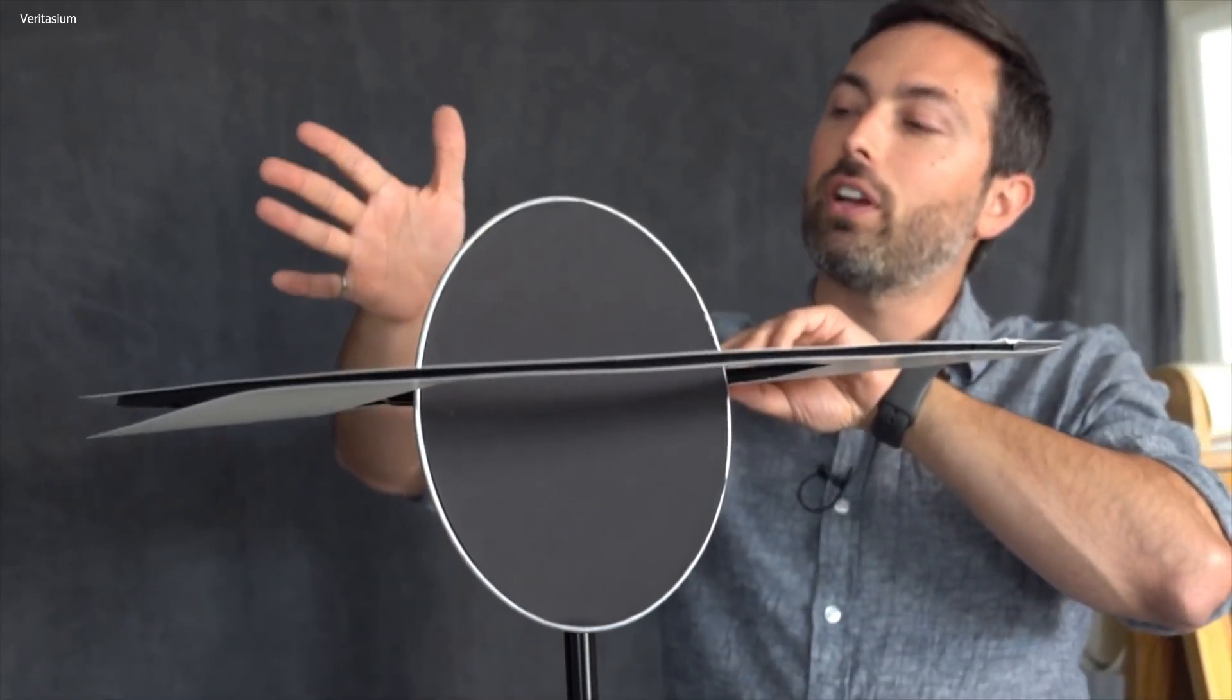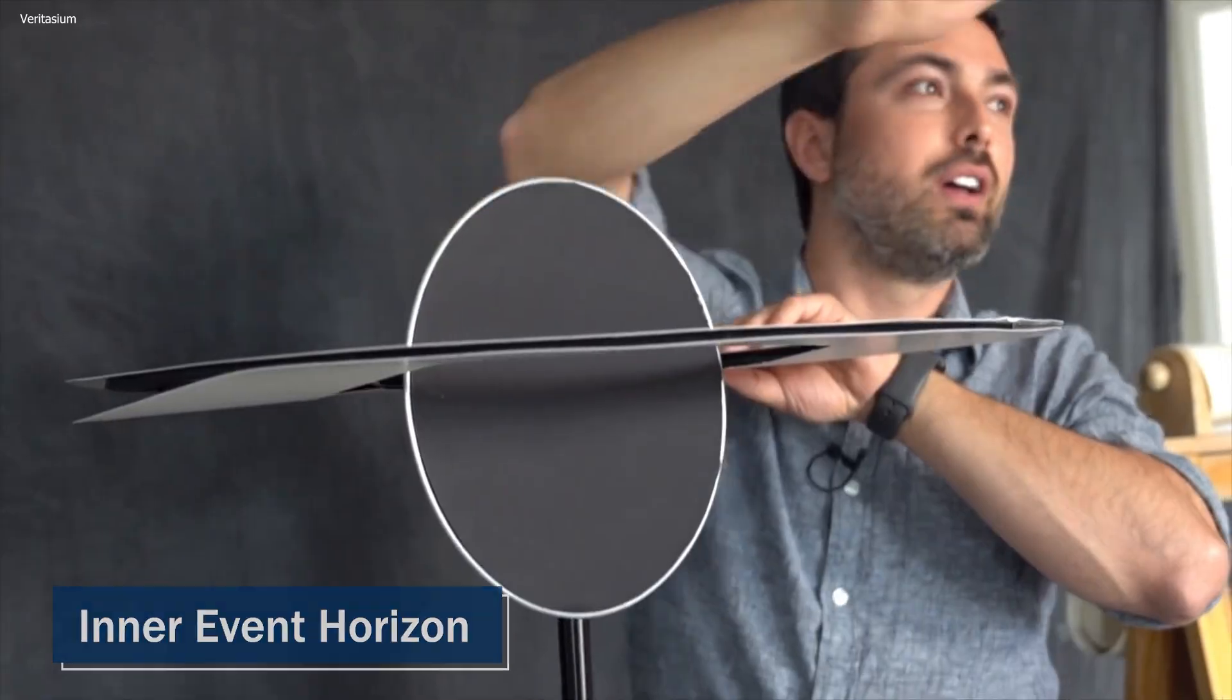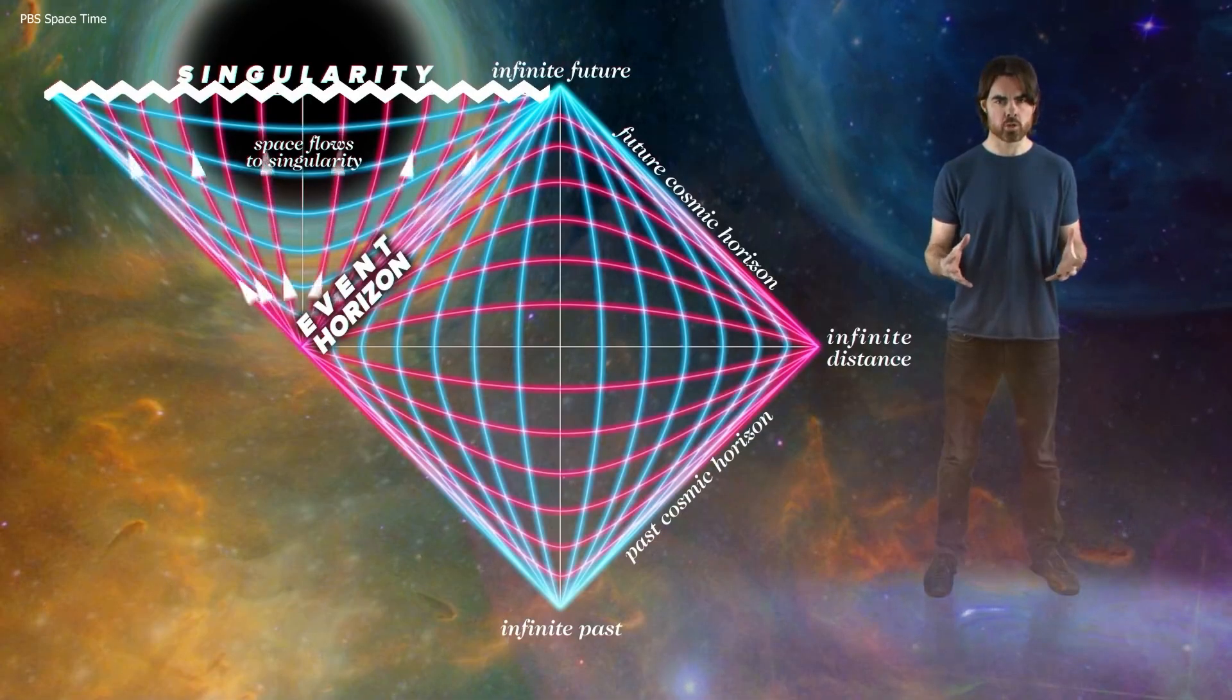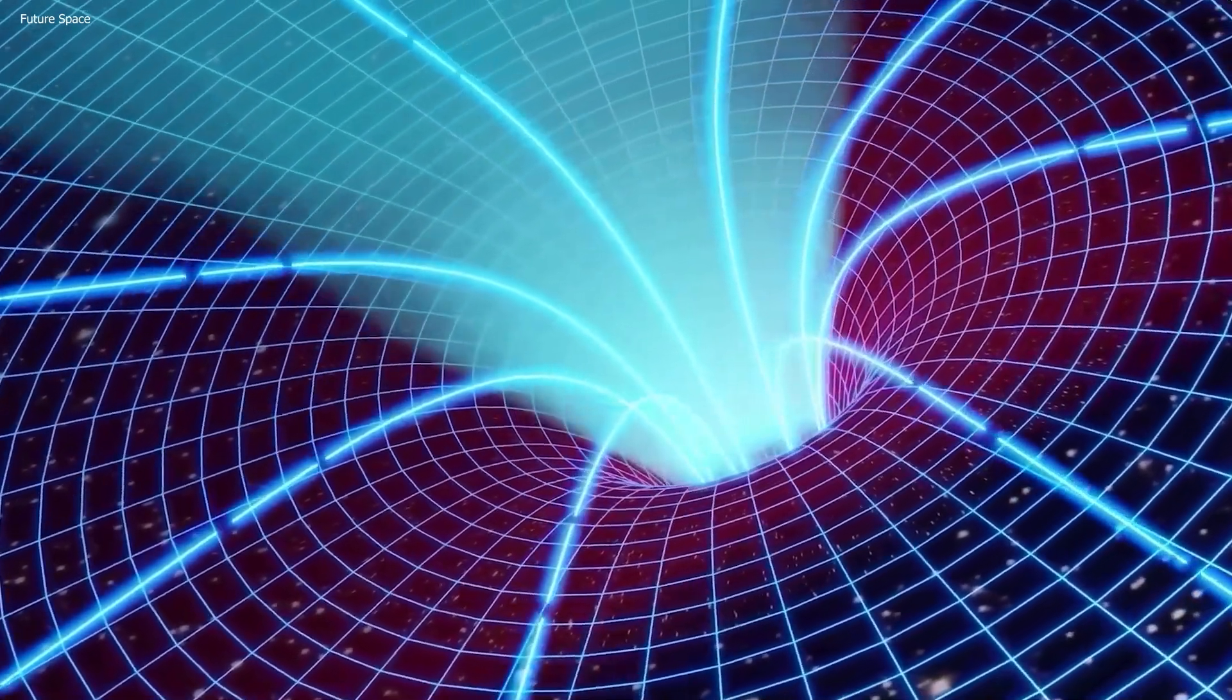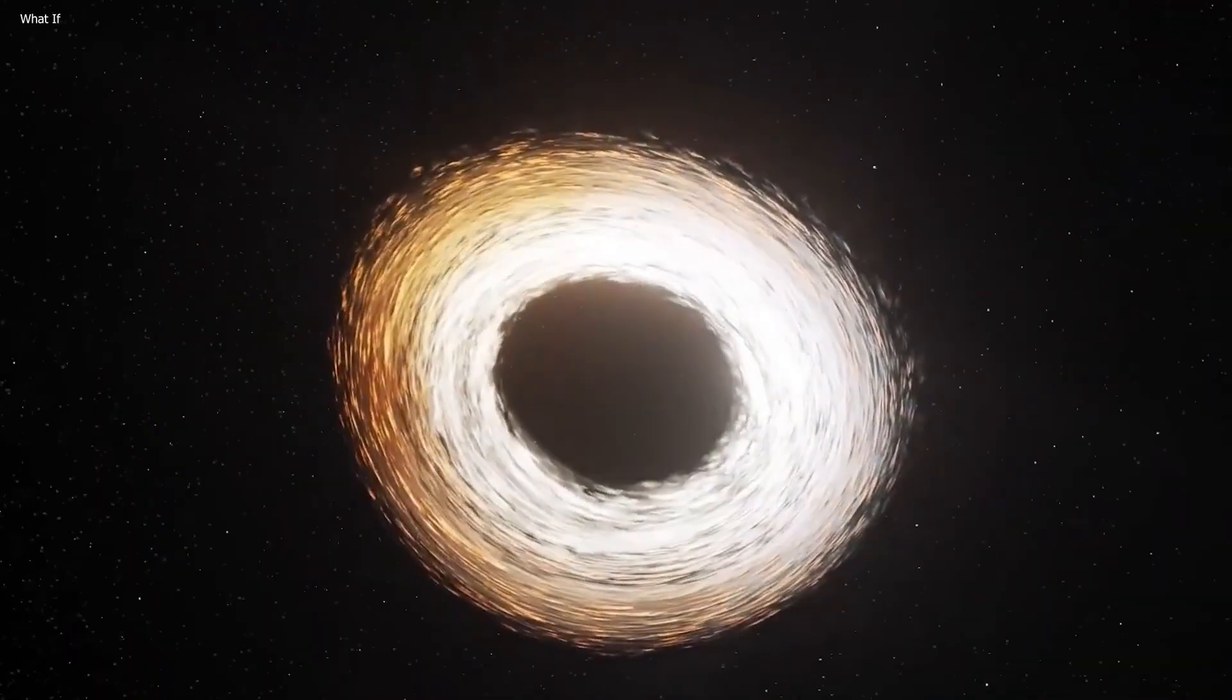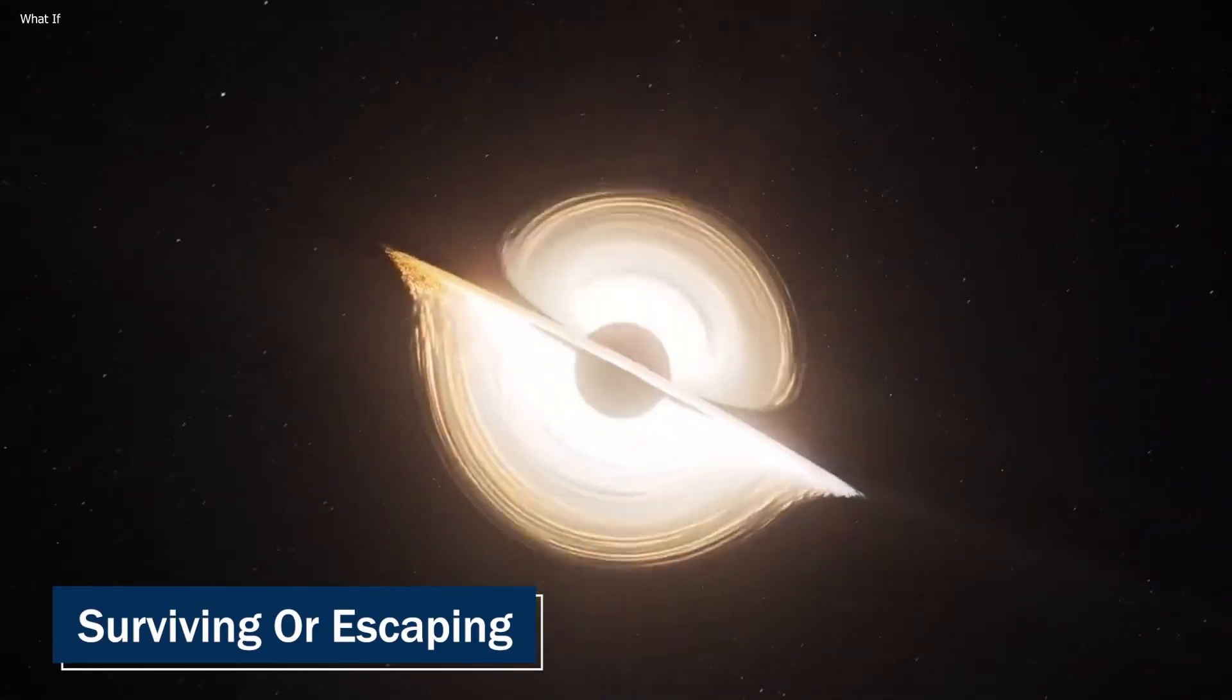The second layer is known as the inner event horizon, which acts as a gateway leading toward the singularity. This is where the real danger lies, as once a particle enters this layer, it has no chance of surviving or escaping, and is almost certain to be crushed into a single point of matter.